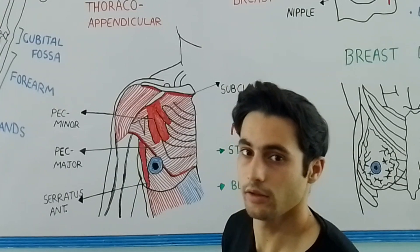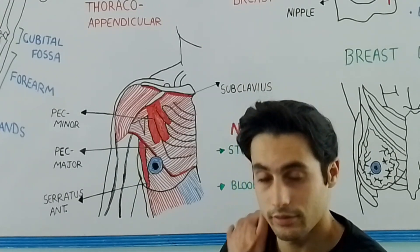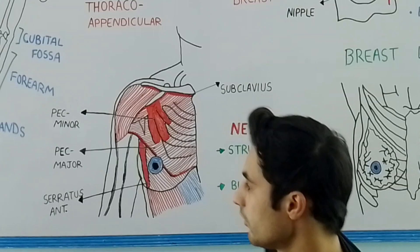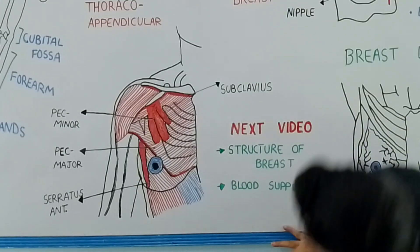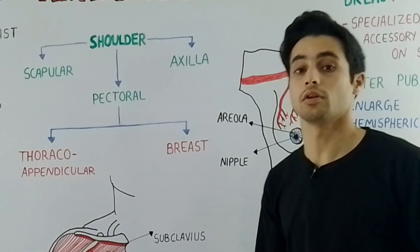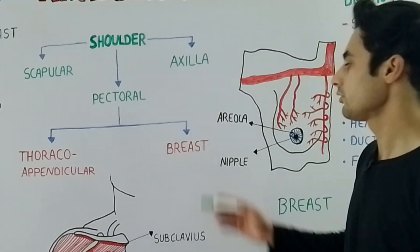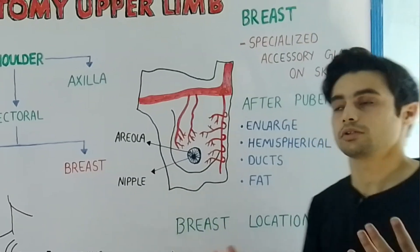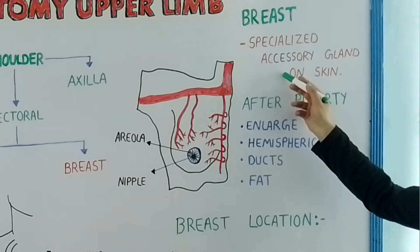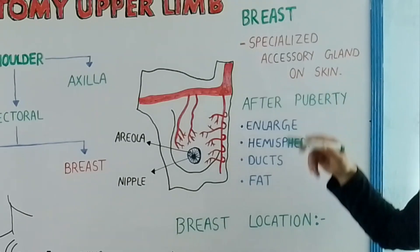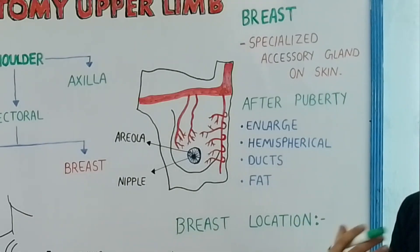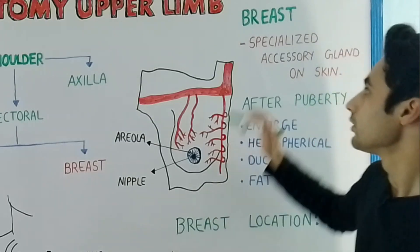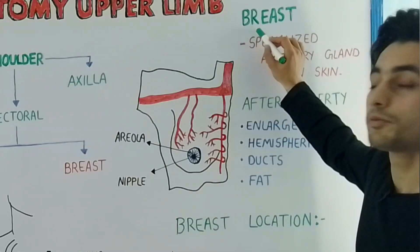The serratus anterior is attached with both the scapula bone and the ribs. Now, let's talk about the breast. The breasts are specialized accessory glands present on the skin, and they release milk in the case of females.